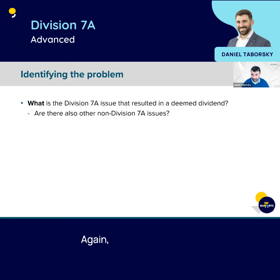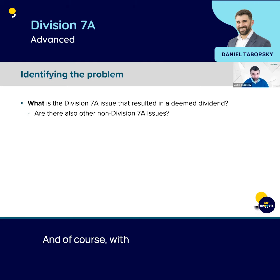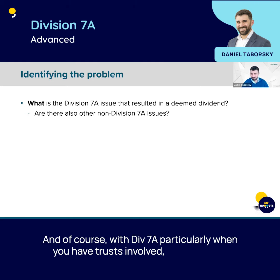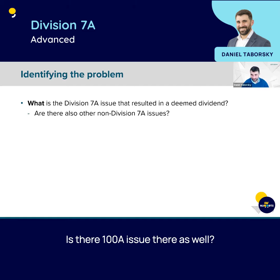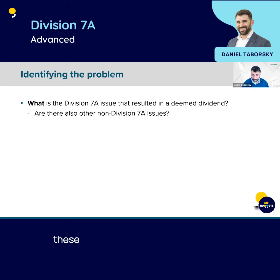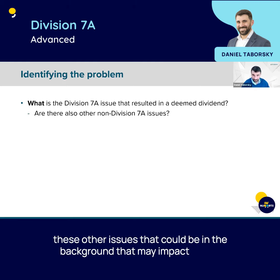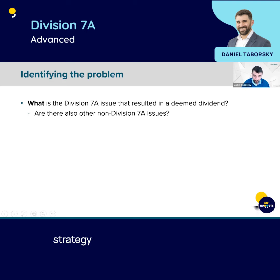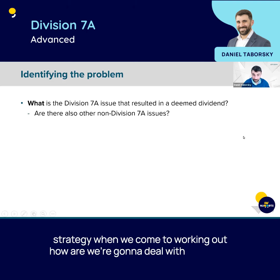Is it FBT? FBT or Div 7A — which one takes precedence? And of course with Div 7A, particularly when you have a trust involved, is there a Section 100A issue here as well? I think you need to focus on the Div 7A issue but don't lose sight of these other issues that could be in the background and may impact on the strategy when we come to working out how we're going to deal with the issue.